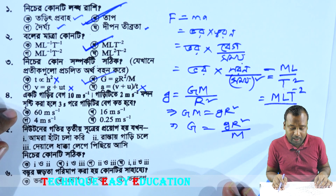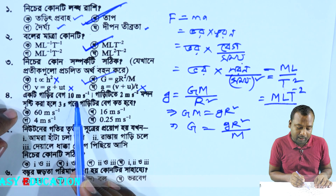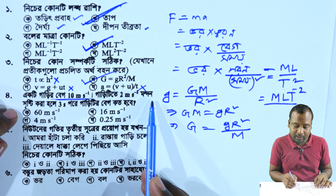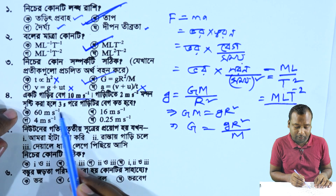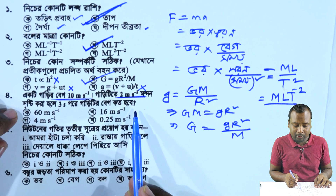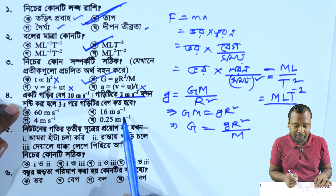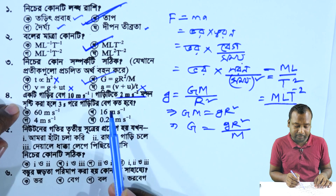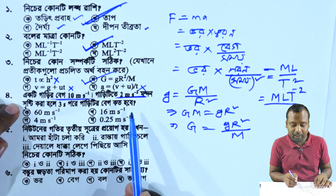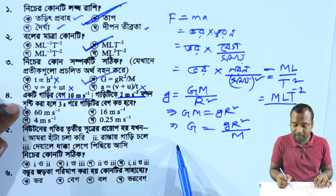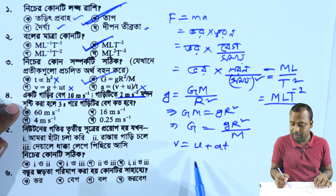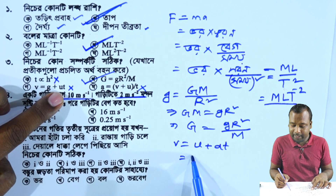The next question: the first is 10 meters per second, then 2 meters per second. The first 2 meters per second is at 3 seconds. The second distance is 6 meters per second. So the object is going to be at 3 seconds, but then at 6 seconds. We know that u plus at, and u is 10 meters per second.